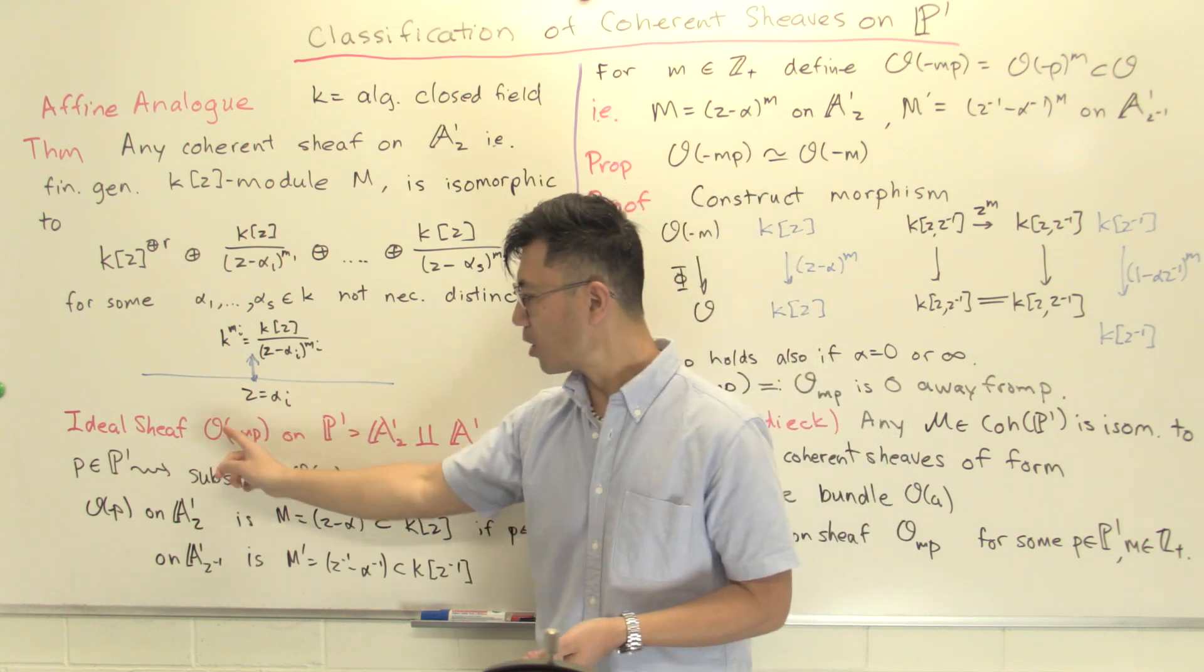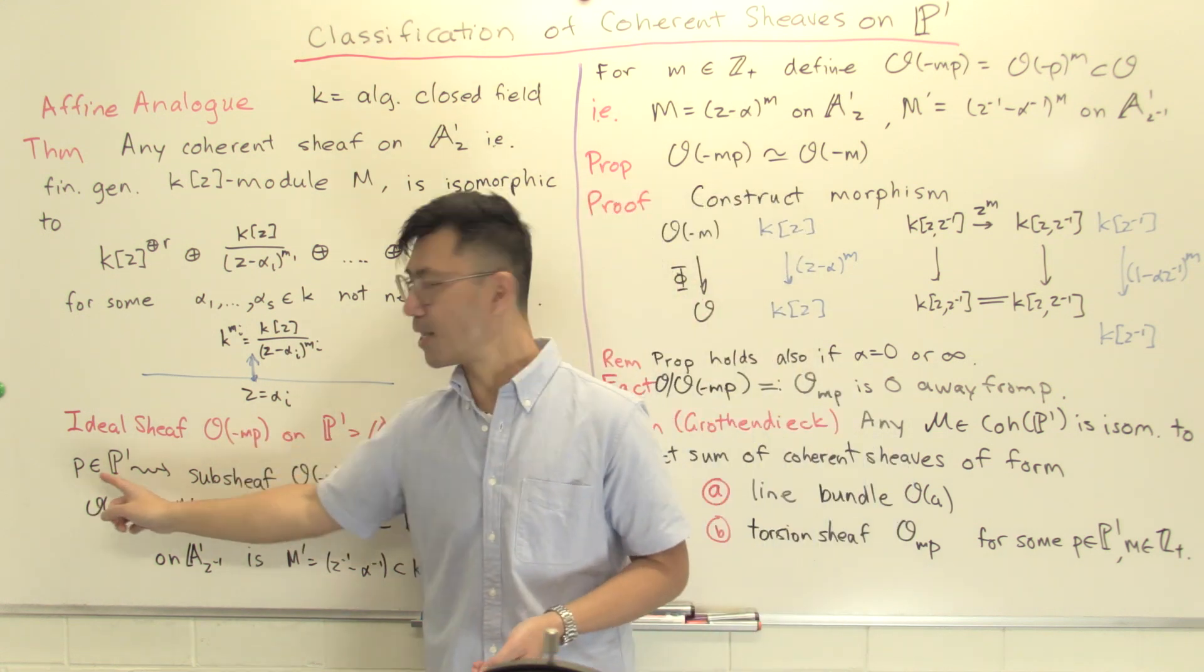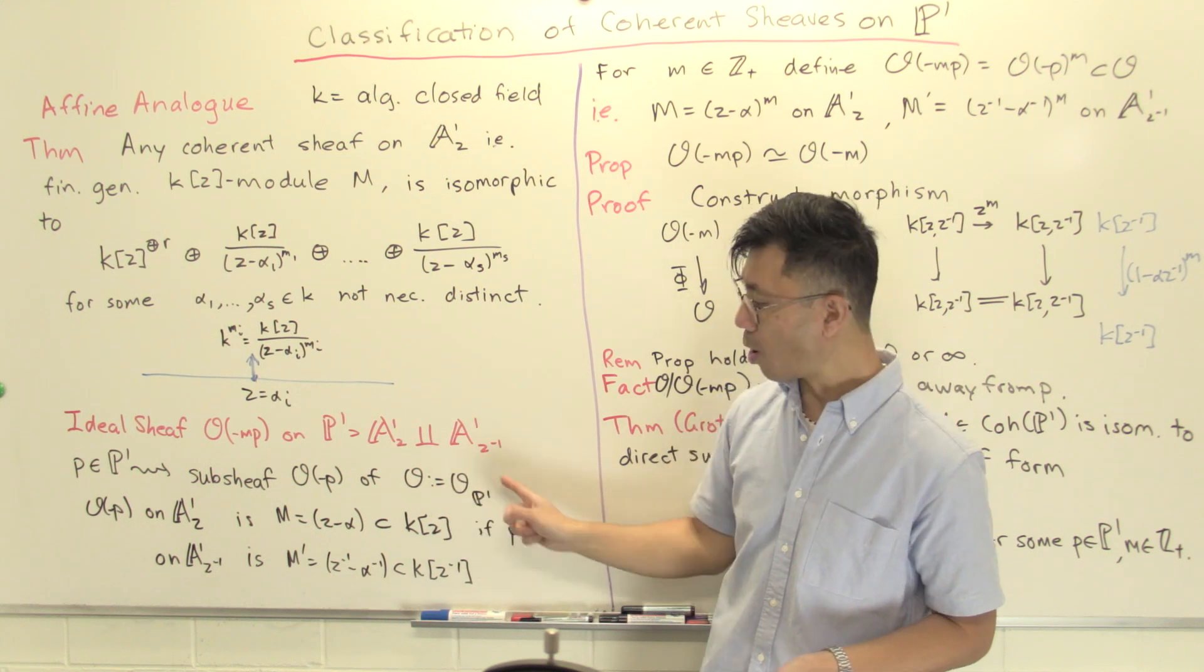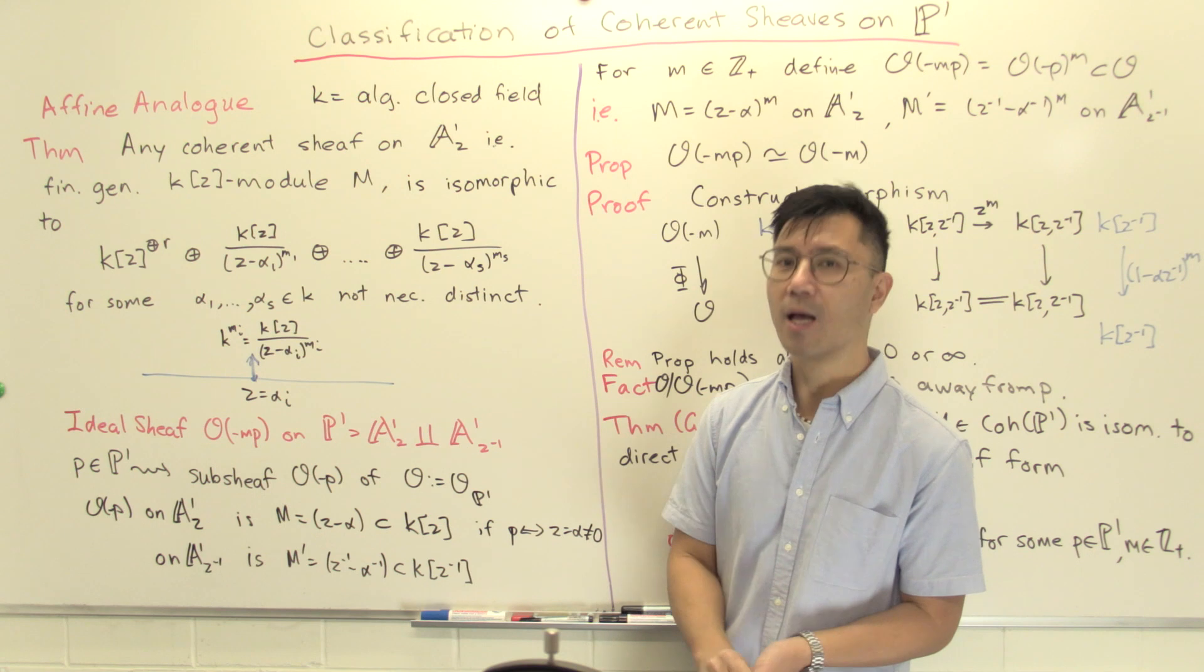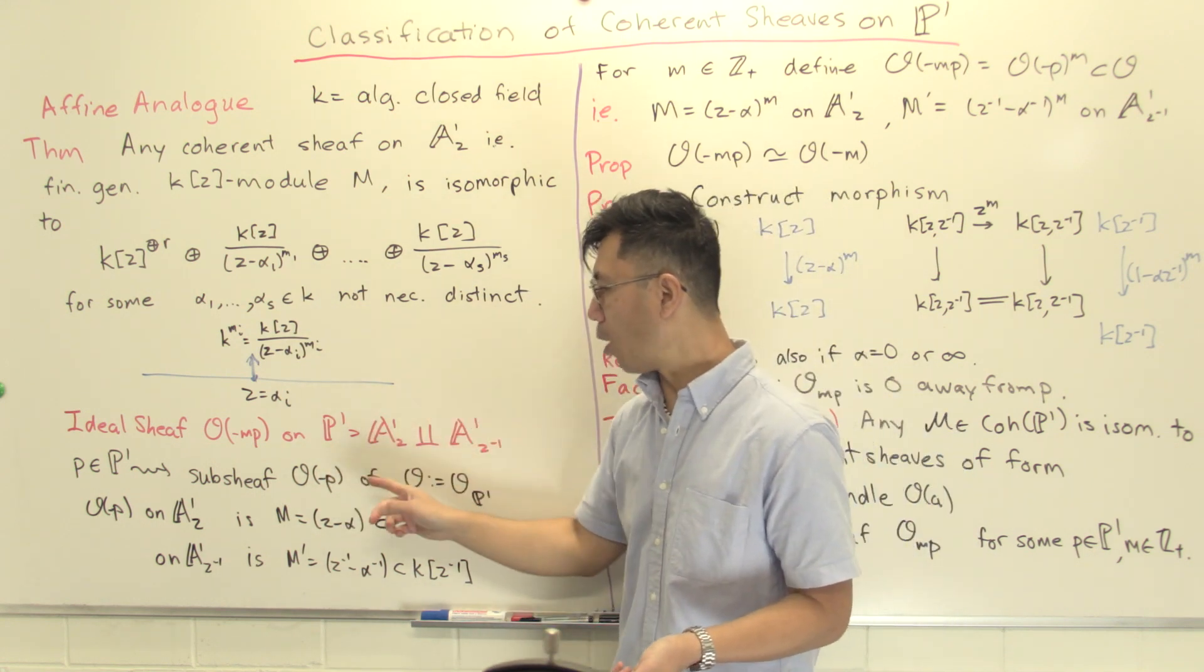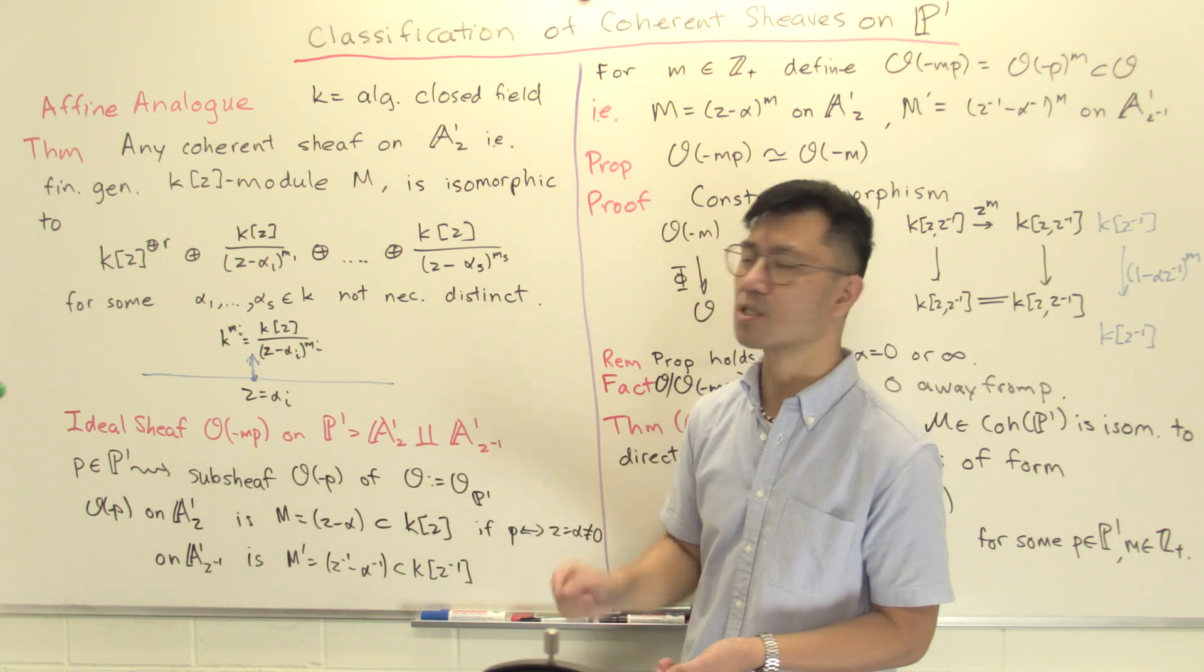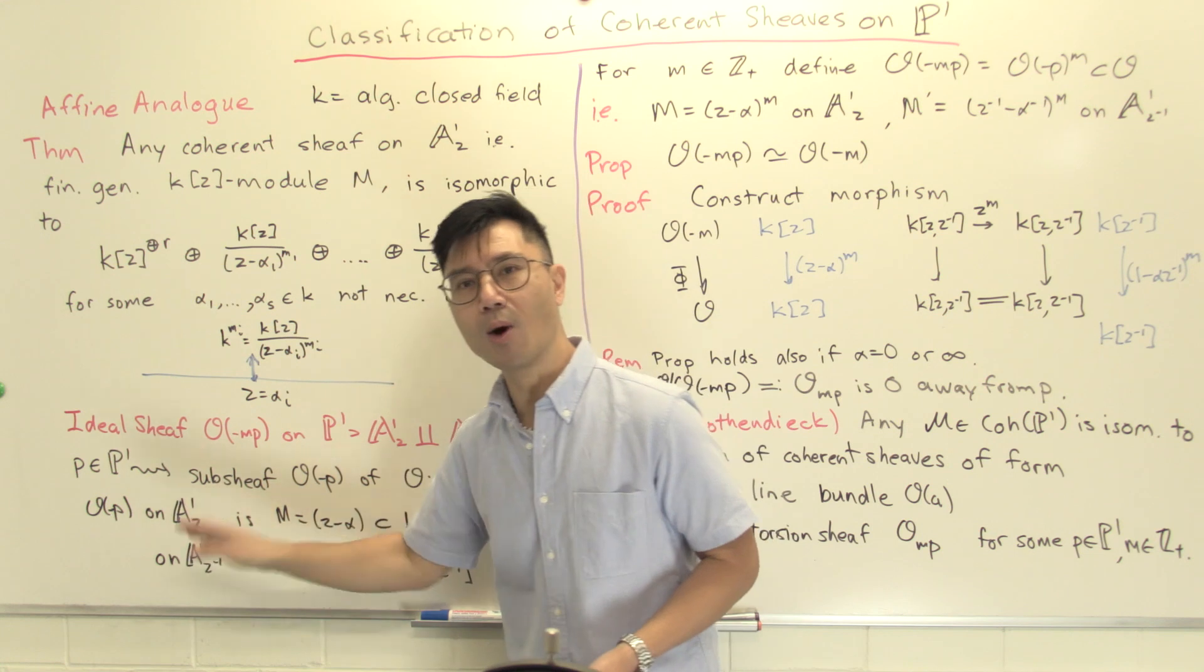First, we introduce the ideal sheaf O(-p) for any point p inside P1. This is a subsheaf of the structure sheaf O on P1. I'll drop the subscript and just write it as O. Let me remind you what that is. I have to tell you what this sheaf is on A1_Z and A1_{Z^{-1}}. Since it's a subsheaf of O, I just need to say how it's a subsheaf of this sheaf O.